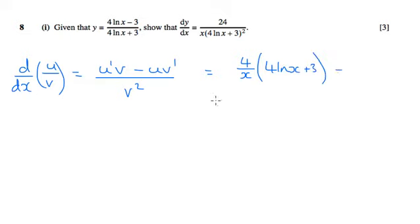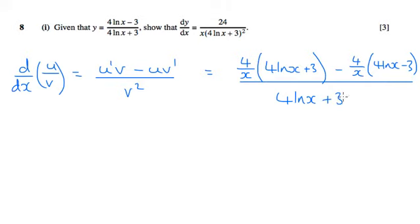And then we're going to do the same thing, but we're going to times the differential of the bottom by the top. Differential of the bottom is also 4 over x because this plus 3 disappears. So we've got 4 over x times by the top, 4 ln x take away 3. And that all then gets divided by the bottom squared, so by 4 ln x plus 3 all squared.